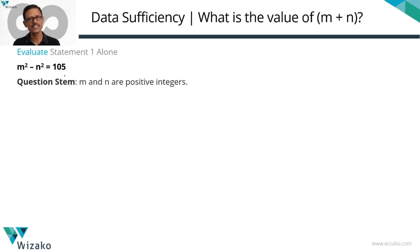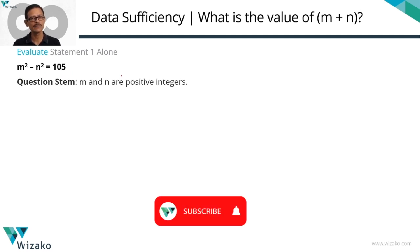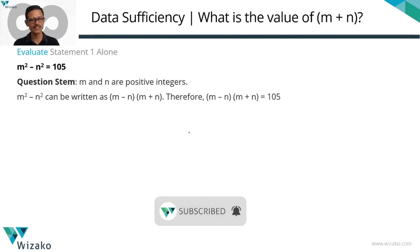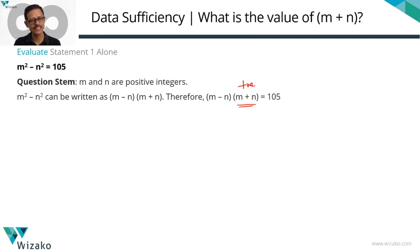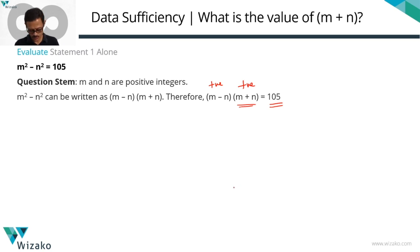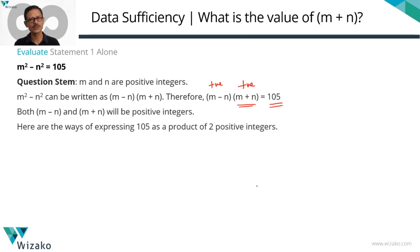Statement 1 says m squared minus n squared equals 105. m squared minus n squared is nothing but m minus n times m plus n. So, m minus n times m plus n equals 105. Since m and n are positive integers, m plus n is necessarily a positive integer, and m minus n is also an integer. The product of two integers is positive when both are positive or both negative. We conclusively know m plus n is positive, which means m minus n also has to be positive. Let's check in how many ways we can express 105 as a product of two positive integers.